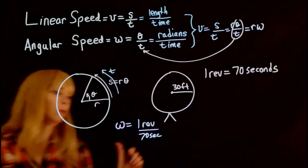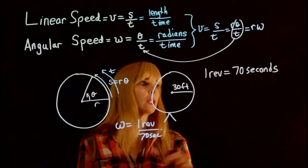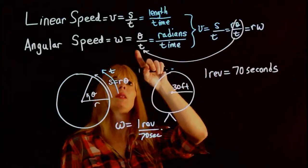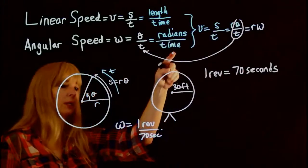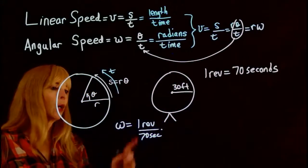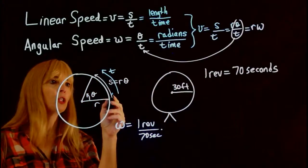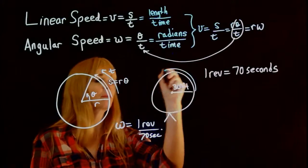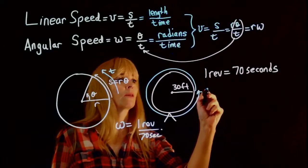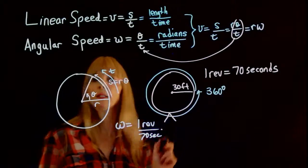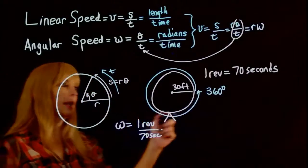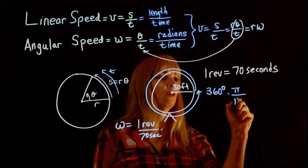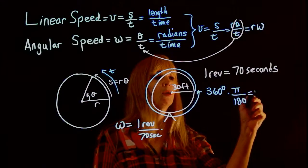What I want to be able to do is I want to change this into radians, because up here this is actually going to be in radians per second. If you remember, one revolution going all the way around the circle is 360 degrees.